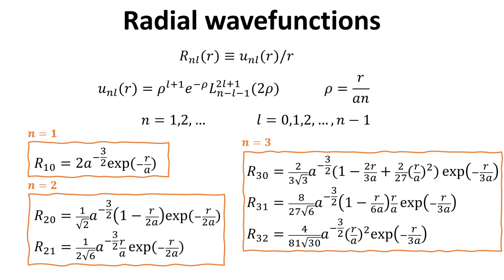The subscript for R contains two numbers, the quantum number n and L. For n equals 1, we have only one radial function with L equals 0. For n equals 2, we have two radial functions with L equals 0 and 1. For n equals 3, we have three radial functions with L equals 0, 1, and 2.